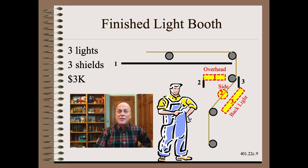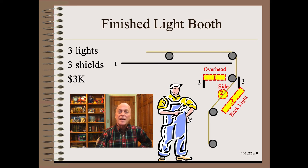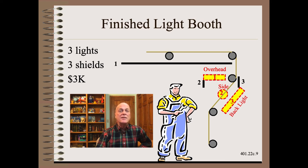Here is our finished on-machine inspection booth. It was simple because it only required three lights and three shields and very little time or expense. This might even pay for itself by avoiding but a single customer return.